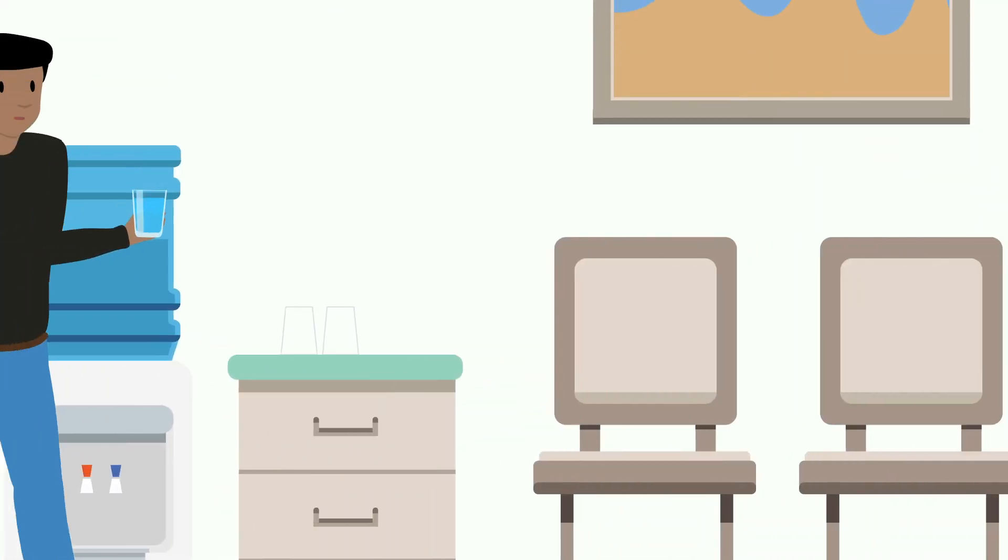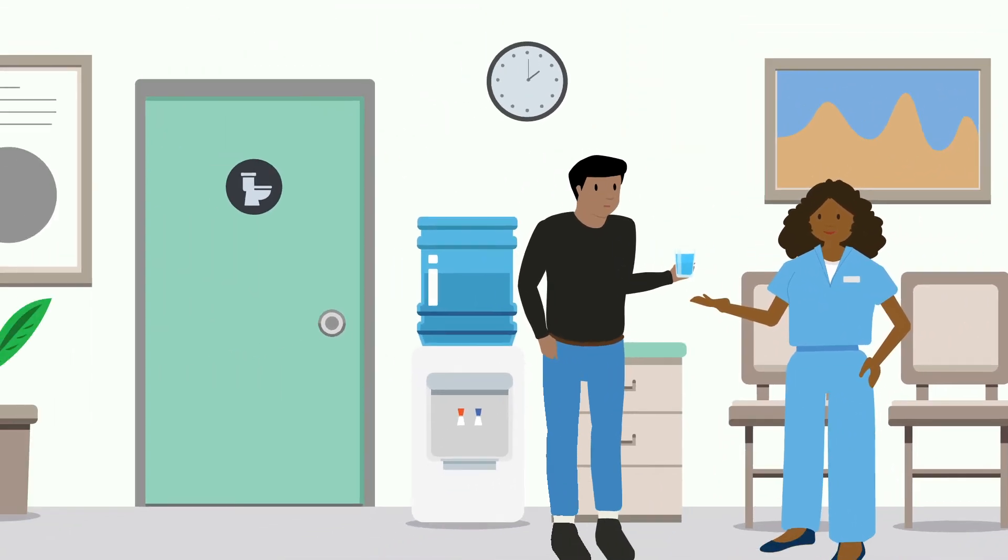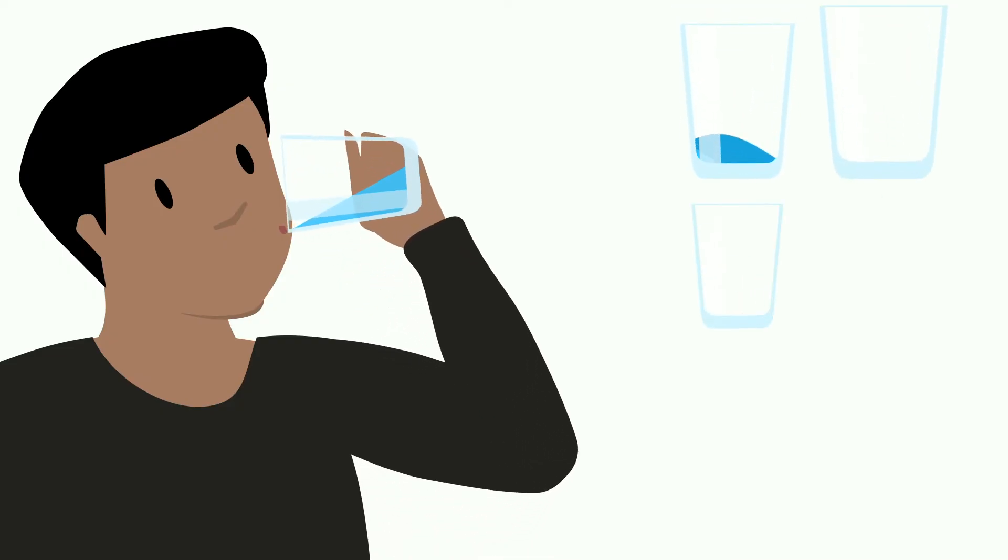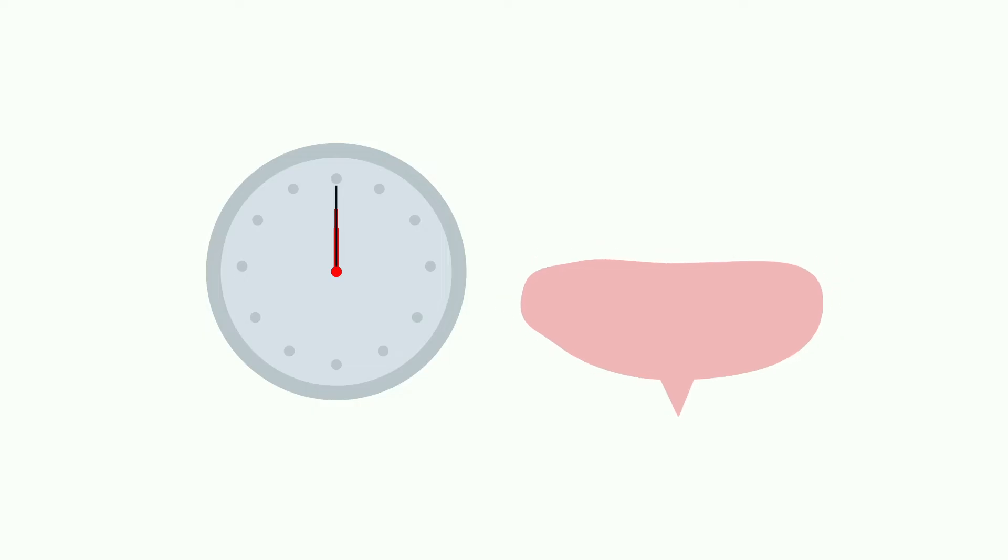When you arrive to this appointment, a radiation therapist will have you use the restroom and then drink anywhere from 16 to 32 ounces, about 2 to 4 cups of water. It takes at least 15 minutes after drinking for your bladder to fill, so it is important you arrive on time.